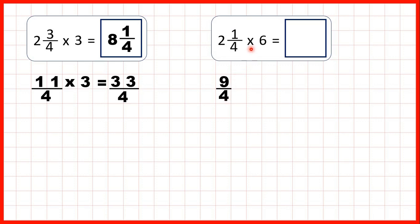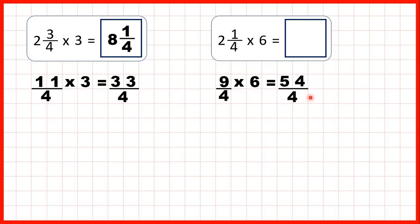We're multiplying by 6, so we remember that we only multiply the numerator by 6. If we multiply the denominator by 6 as well, then all we've done is found an equivalent fraction, but we want to make 2 and 1 quarter 6 times bigger — we don't want to find something that's equivalent. So 9 times 6 is 54 and we keep the denominator the same, giving us 54 over 4.